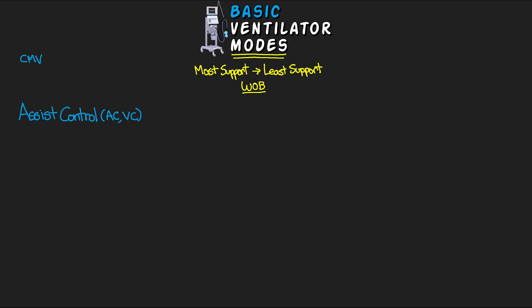In Assist Control there are key settings: a predetermined tidal volume set for each breath, a set frequency or breaths per minute, FiO2, and PEEP. Importantly, we are not going to set a pressure support in this mode. CMV or control ventilation delivers whatever the set number of breaths and volume are — the vent just pumps that out one after another, with no deviation regardless of what the patient needs or tries to do.